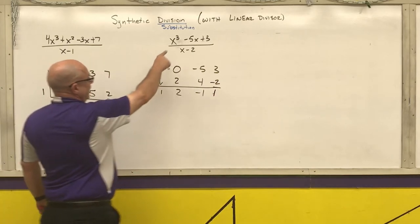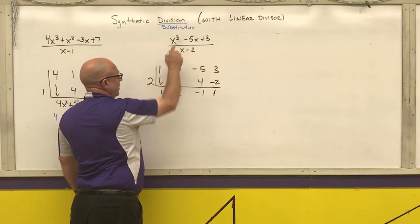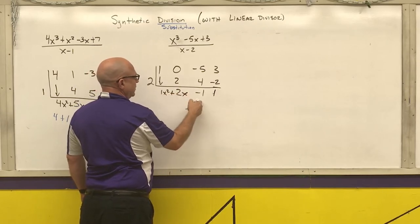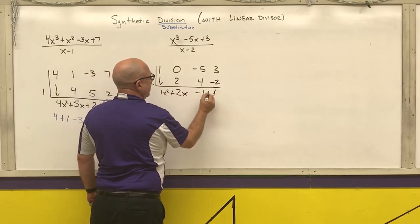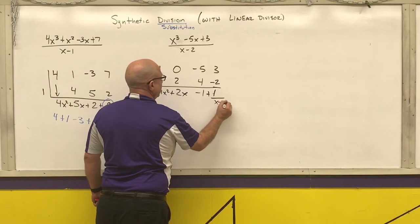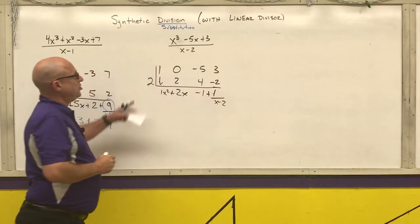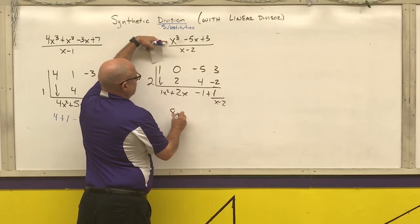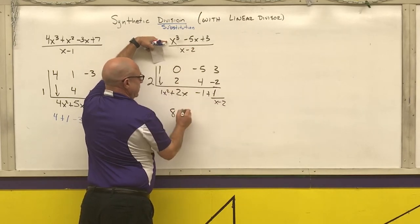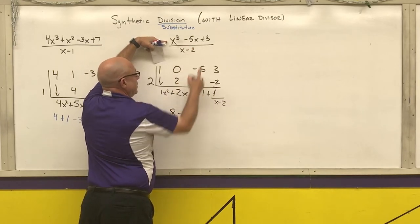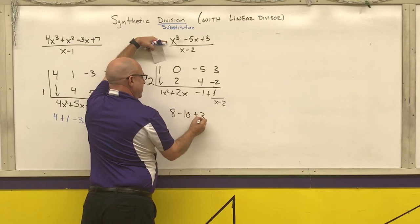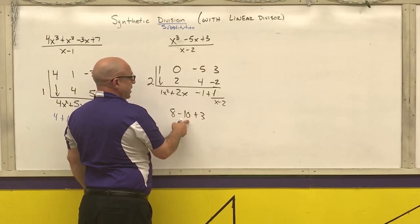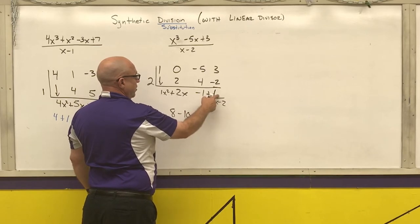So now I write down my answer: 1 degree less than x cubed is x squared, so x squared plus 2x minus 1 plus 1 over x minus 2. Let's put a 2 into the original function: 2 cubed is 8. 5 times 2 is 10, then plus 3. 8 minus 10 is negative 2. Negative 2 plus 3 is, in fact, 1.